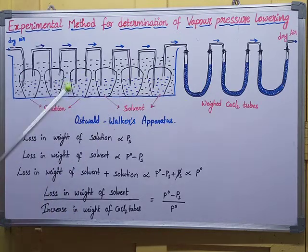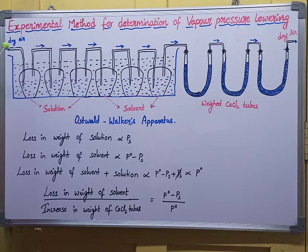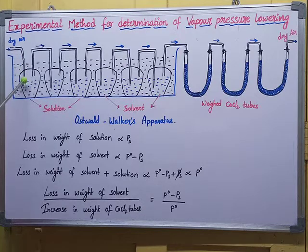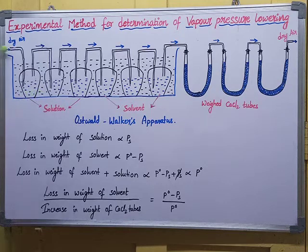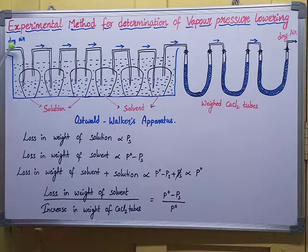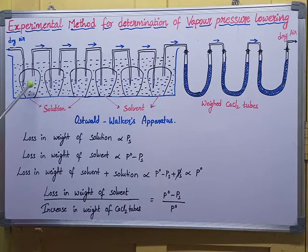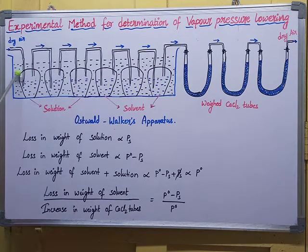From one side, we are bubbling dry air through the apparatus. As the dry air passes through, it takes up vapors of the solvent, because the solute is already non-volatile in nature. The dry air comes from one direction and passes through all the tubes, becoming saturated with the vapors of the solvent present in the first three bulbs.